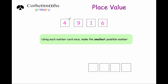We've got number cards 4, 9, 1 and 6. The question says: use each number card once to make the smallest possible number. We've got answer boxes for thousands, hundreds, tens and units. Let's figure out what number card we want in the thousands box. It's a choice between 4,000, 9,000, 1,000 or 6,000. Let's put the 1 in there because that would make the smallest possible number.